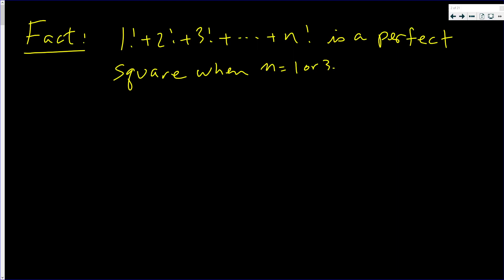This video, I'm going to prove a very interesting fact. One factorial plus two factorial plus three factorial all the way up to plus n factorial is a perfect square only when n is equal to one or three.